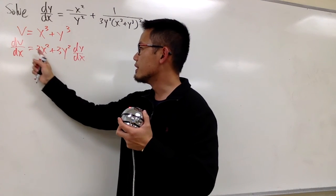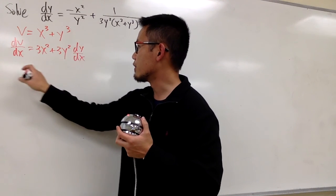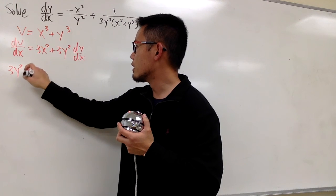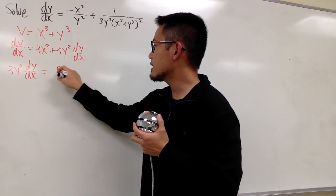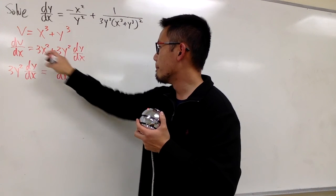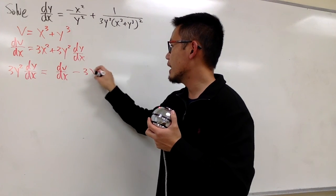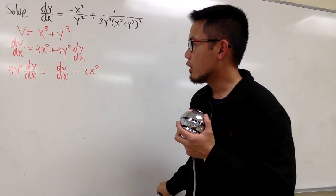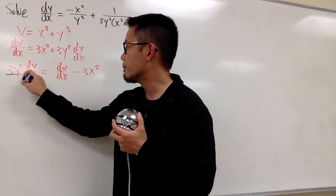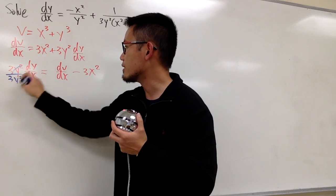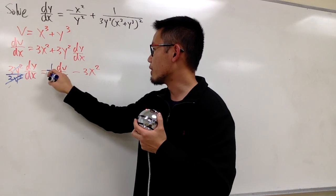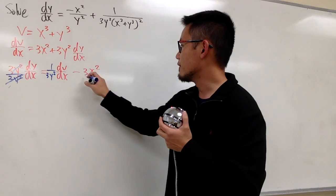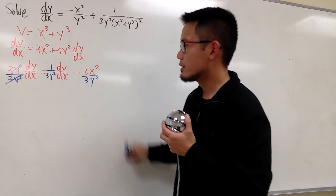So, let's move this to the other side, and I'll put this down first. 3y squared dy dx will be dv dx minus that 3x squared. And then, from here, of course, let's just go ahead and divide everything by 3y squared. So, for this right here, I will put this down 1 over 3y squared, and I'll divide this by 3y squared. Okay?